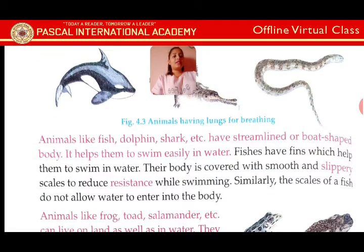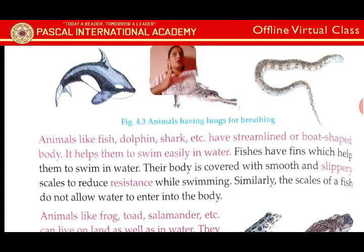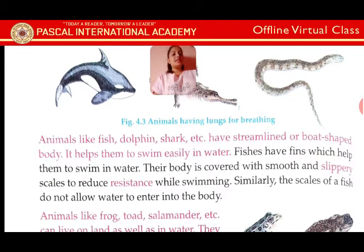Animals like fish, dolphins, and sharks have a streamlined or boat-shaped body, which helps them to swim easily in water. Fish have fins which help them to swim in water. Their body is covered with smooth and slippery scales to reduce resistance while swimming. Similarly, the scales of fish do not allow water to enter into the body.